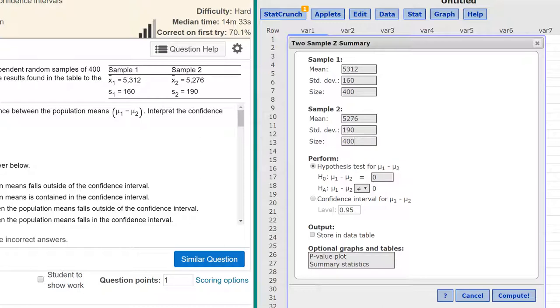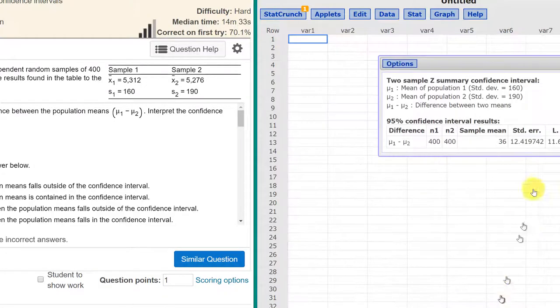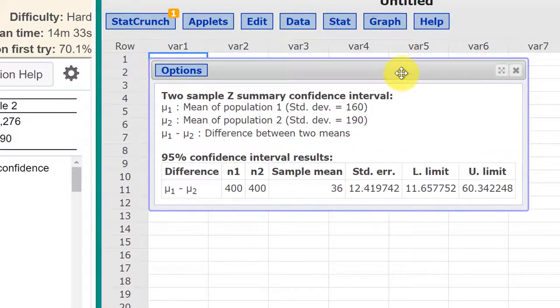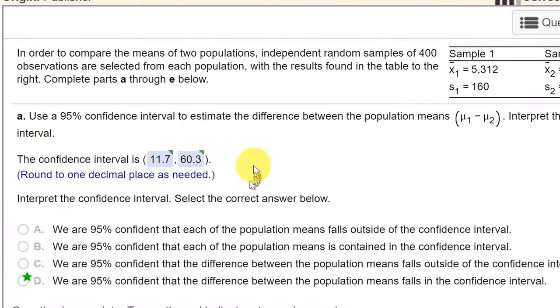The first question is about the 95% confidence interval. So we go down here and we click on that radio button to say we want the confidence interval for the mean difference mu1 minus mu2, 95%. And we click compute and we bring up an answer box. We've got our sample mean. This is the difference, that's 36 mu1 minus mu2. We've got a lower limit of 11.65. I think they want just to one decimal point so that would round to 11.7, and then the upper of 60.3.